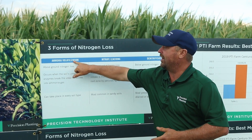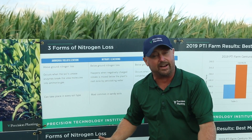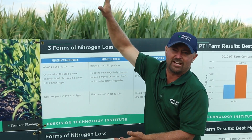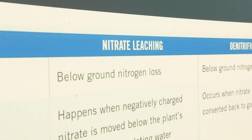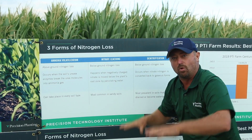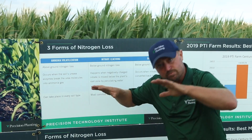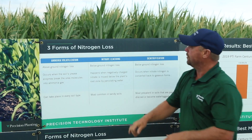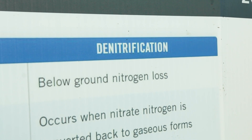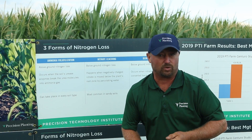One, we can have volatilization. This is what happens when we put nitrogen on top of the ground and it's not incorporated — it will gas off into ammonia, and that's the volatilization loss that can occur. There's also leaching, where rainwater will move nitrogen lower throughout the soil profile and we can actually lose it through tile. The third form of nitrogen loss is denitrification, where we get saturated soils, we lose oxygen, and we're going to lose nitrogen as a result.